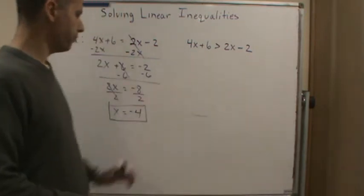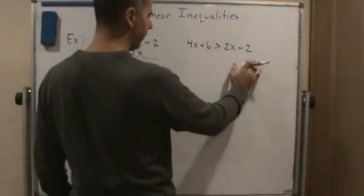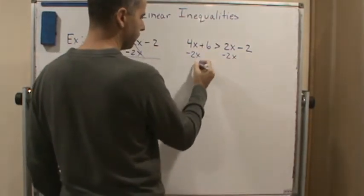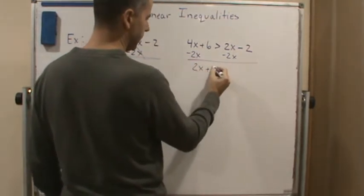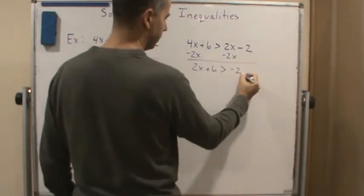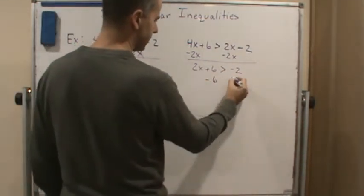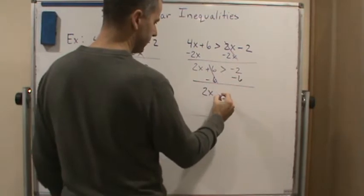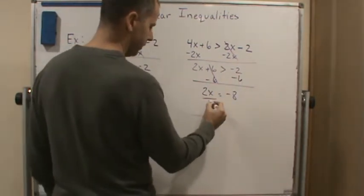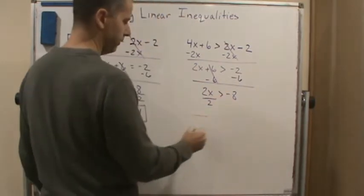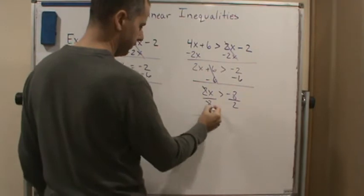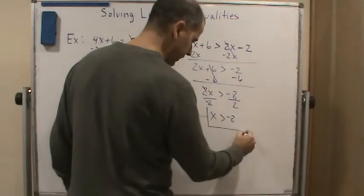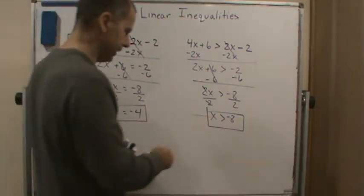Now let's solve this one and see what happens. I'm going to do the same thing — I'm going to subtract 2x from both sides. I get 2x plus 6 is greater than negative 2, and so then I'm going to subtract 6 from both sides, and I get 2x is greater than negative 8. Then I'm going to divide both sides by 2, and I get x is greater than negative 4.